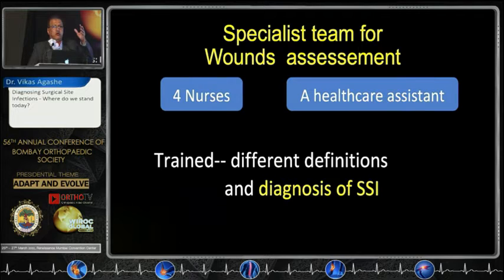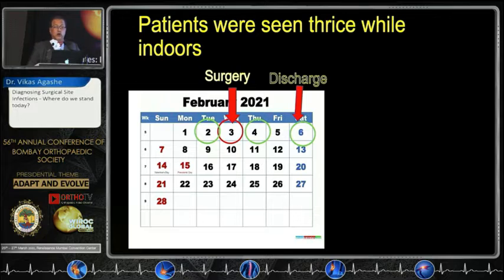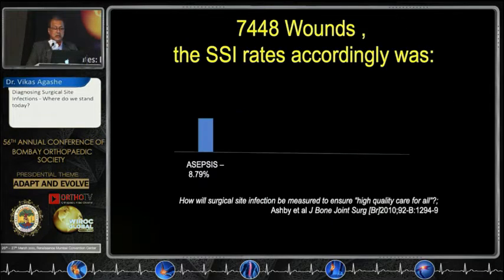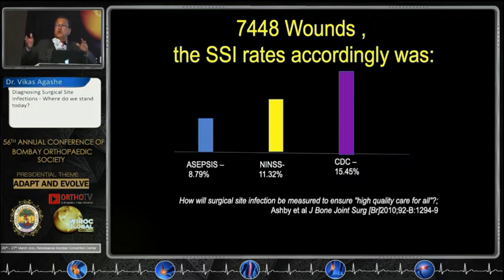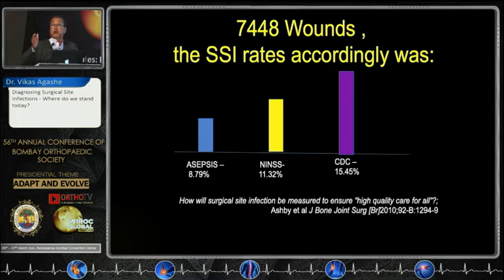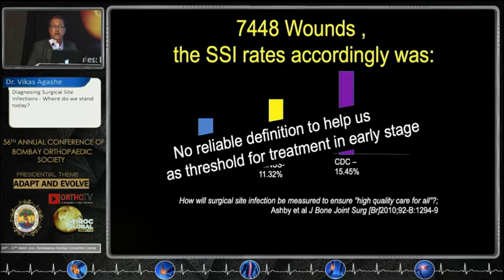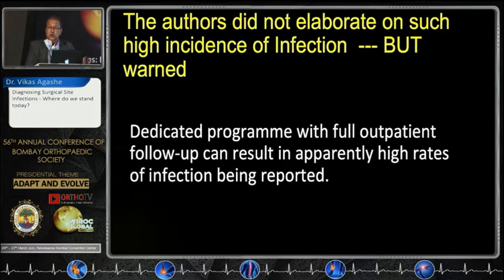The protocol was very thorough — four nurses assessed patients three times while admitted, and patients were also given a questionnaire to return. The infection rate using the three definitions varied significantly: with ASEPSIS it was around 8-point-something, with NINSS it was 11.3%, and with CDC it was 15.4%. Normally we would expect infection rates of 2–3% or less, but these objective definitions yielded rates between 8.7% and 15.4% — really concerning. There was no reliable definition either as a diagnostic tool or as a treatment threshold, and they warned that such surveillance programs could lead to apparently inflated infection rates.